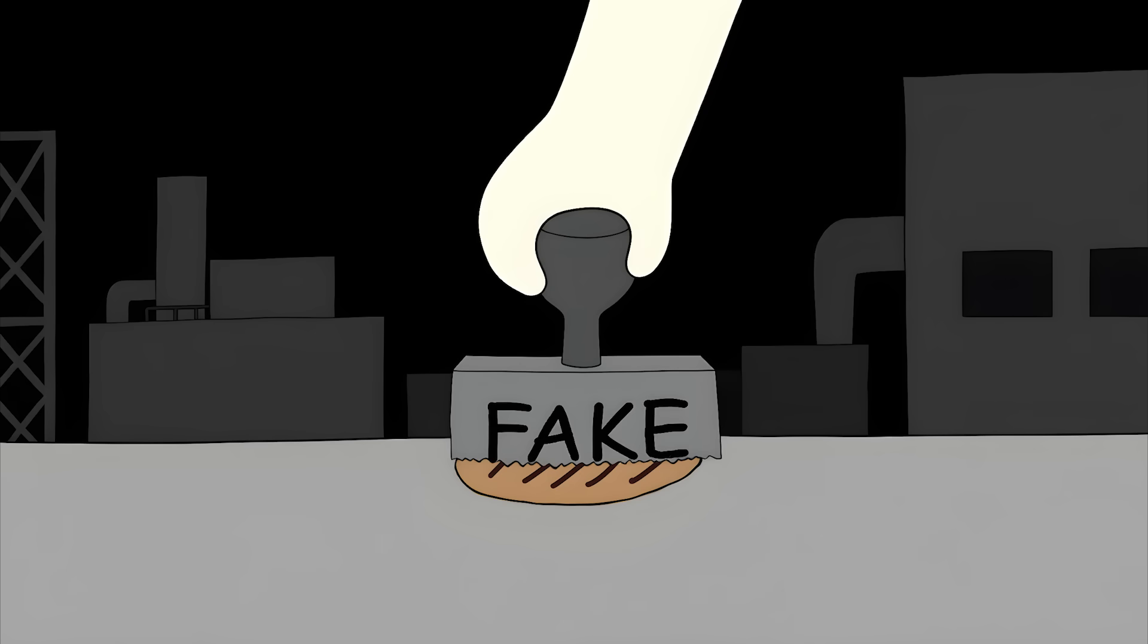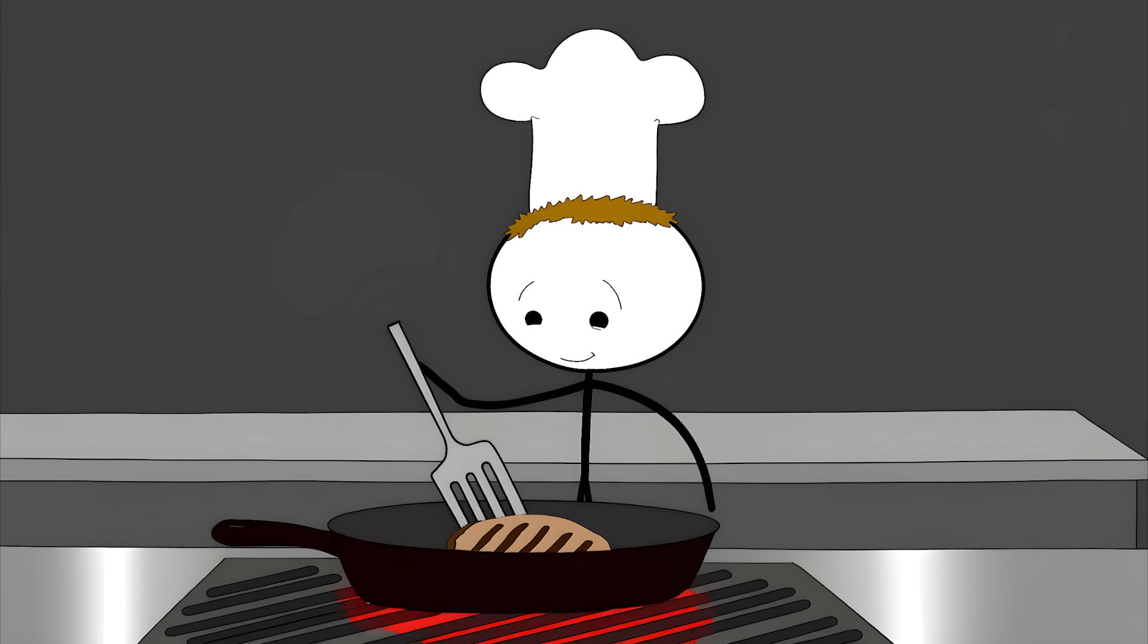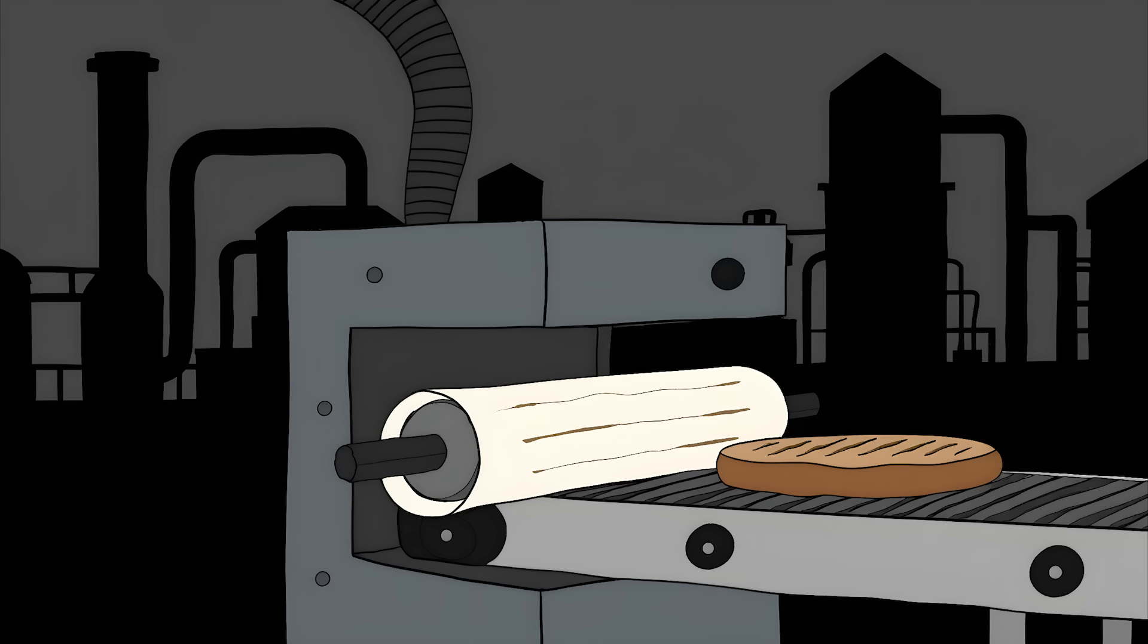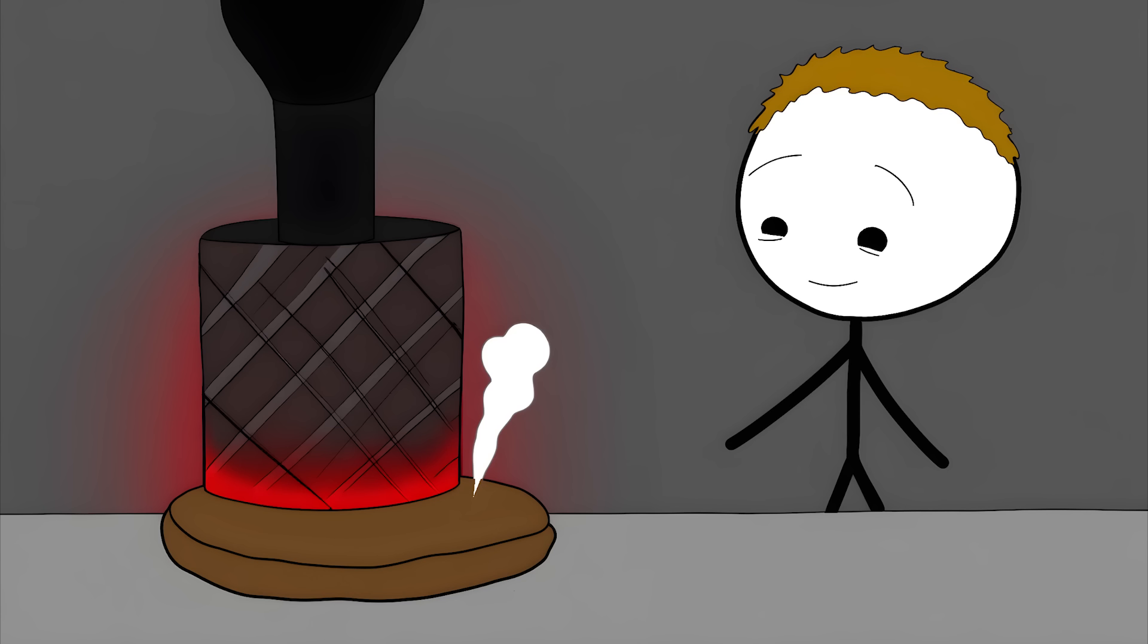Let's get right into it. 10. Fake Grill Marks. Ever look at those perfect grill marks on your frozen burger and think, wow, that looks delicious? Those marks aren't from some master chef carefully grilling your food. They're from a machine called a rotary brander that stamps fake grill marks onto your food. Think of it like a giant rubber stamp, except instead of ink, it uses superheated metal to burn those perfect lines onto the meat.